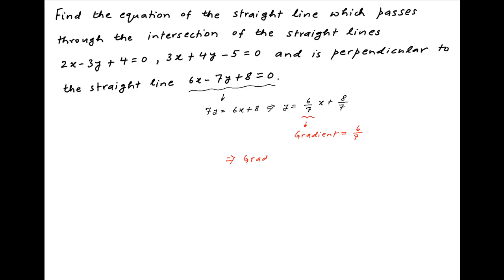Therefore, the gradient of the line which is perpendicular to this line is equal to minus 1 divided by (6/7), which is equal to minus 7/6.